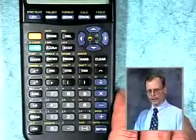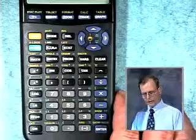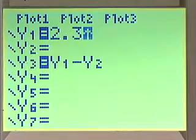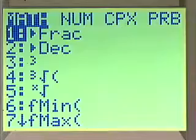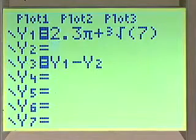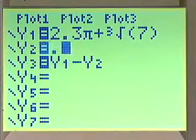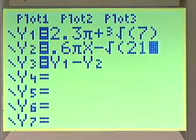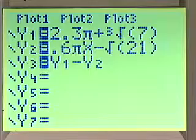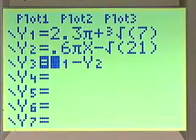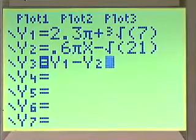To solve this inequality using the x-intercept method, we'll go to our graphing calculator and enter the left side in y1: 2.3 pi plus the cube root of 7. We'll enter the right side in y2: 0.6 pi x minus the square root of 21. We'll turn y2 and y1 off. We already have entered the y1 minus y2 in the y3 menu as we've done before.